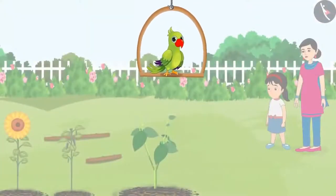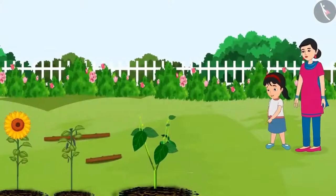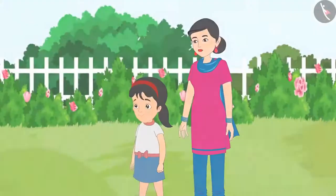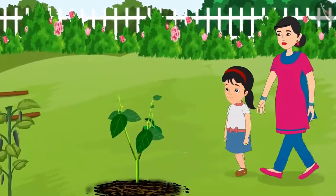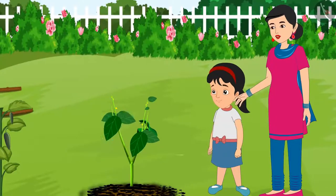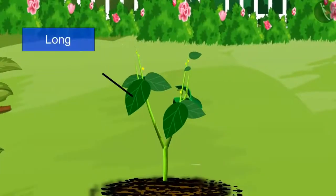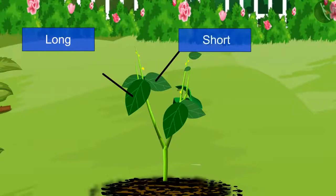Today is Sunday and Pinky and her mother have gone to the garden for a walk. Pinky says: Mummy, look at that plant. All of its leaves are different. Yes, Pinky. Come let's go closer and look at it. Mummy, look at these two leaves. They both are different. Yes, Pinky. The length of both of these leaves is different. Out of these two leaves, this leaf is long and this leaf is short.